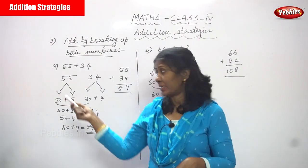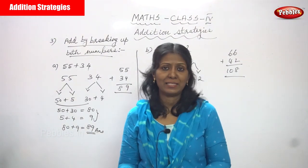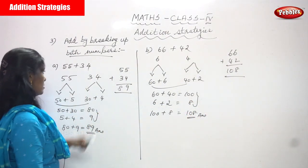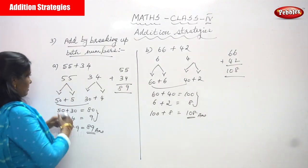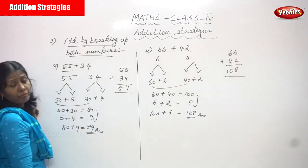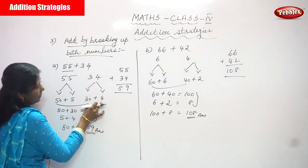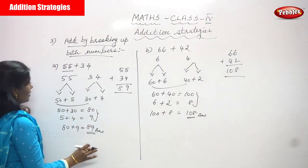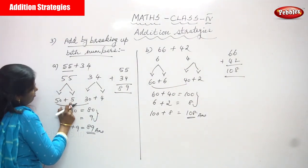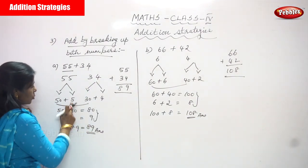So we have to split both numbers, then add them. The first number is 55, which we are going to split as 50 plus 5. The second number is 34, which we split as 30 plus 4. This gives us the ones and the tens for each number.